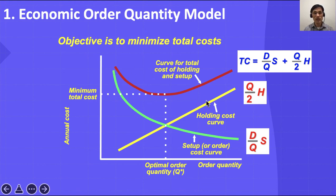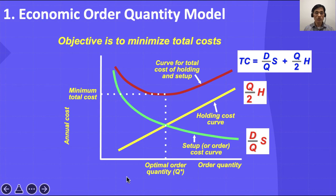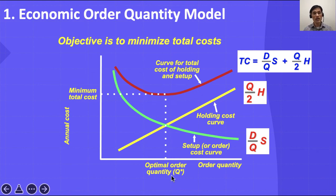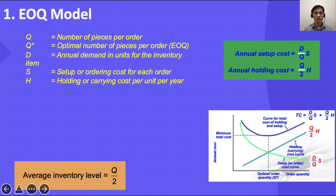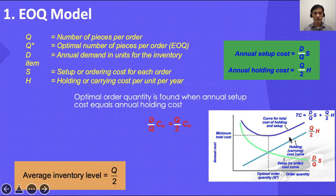If you add them up, you have the total cost shown in red on the graph. Total cost equals setup cost plus holding cost, and that gives you the EOQ model. The optimal point where you minimize inventory management cost is where these two lines intersect and where total cost is at its lowest.